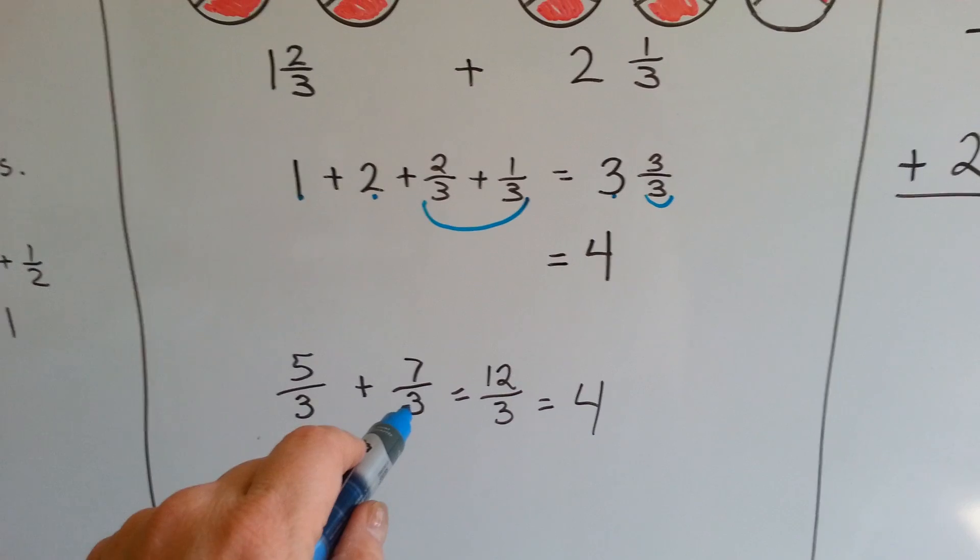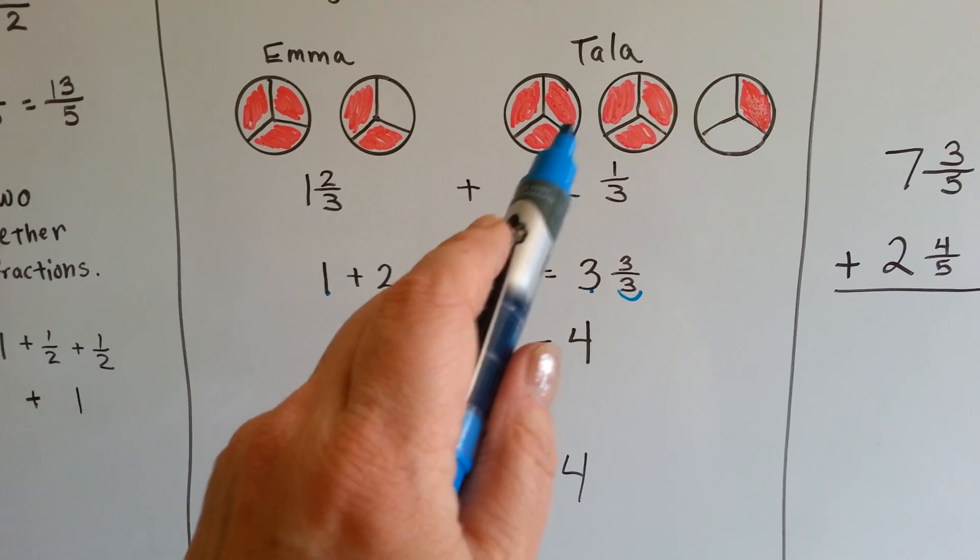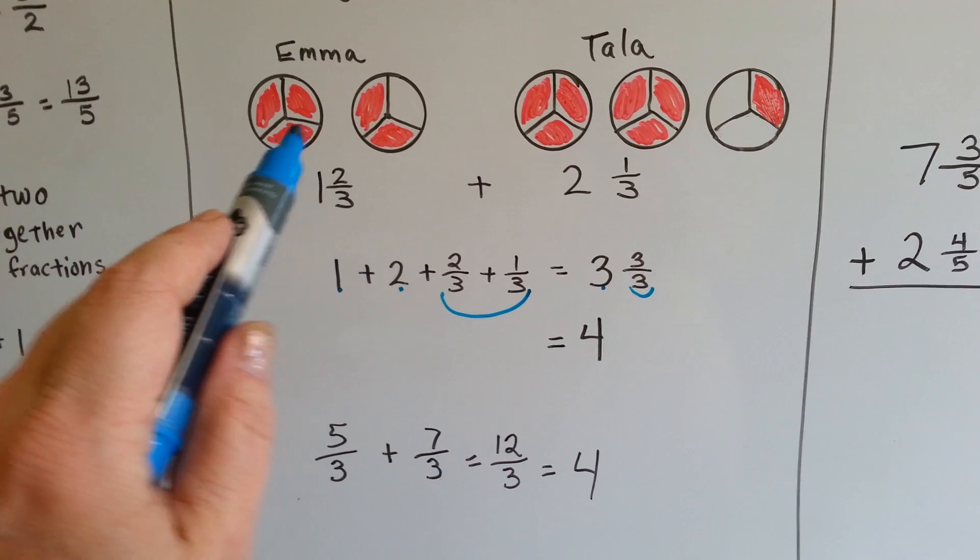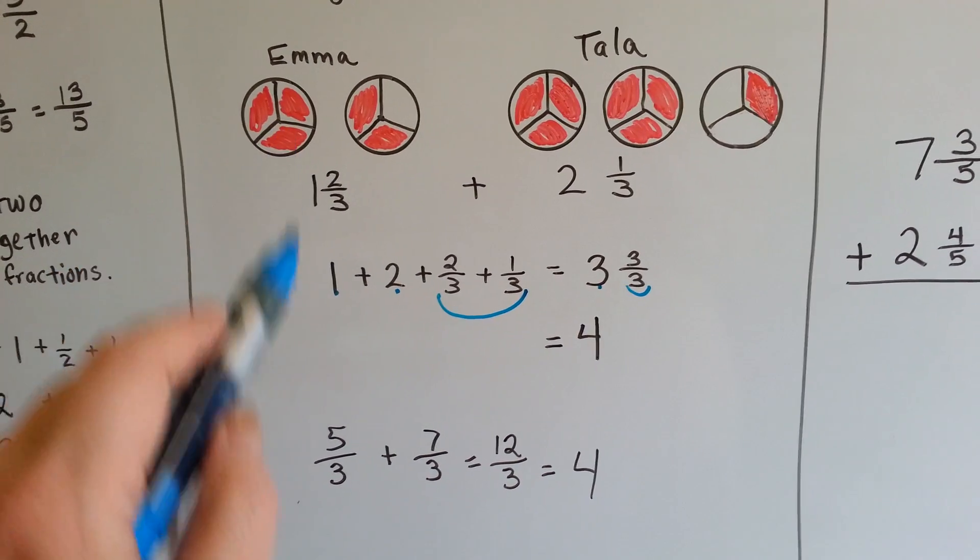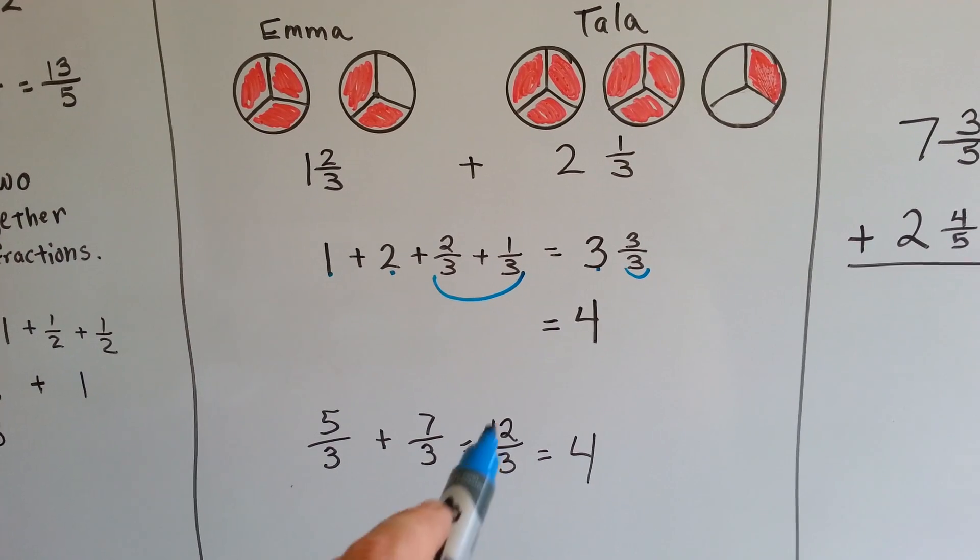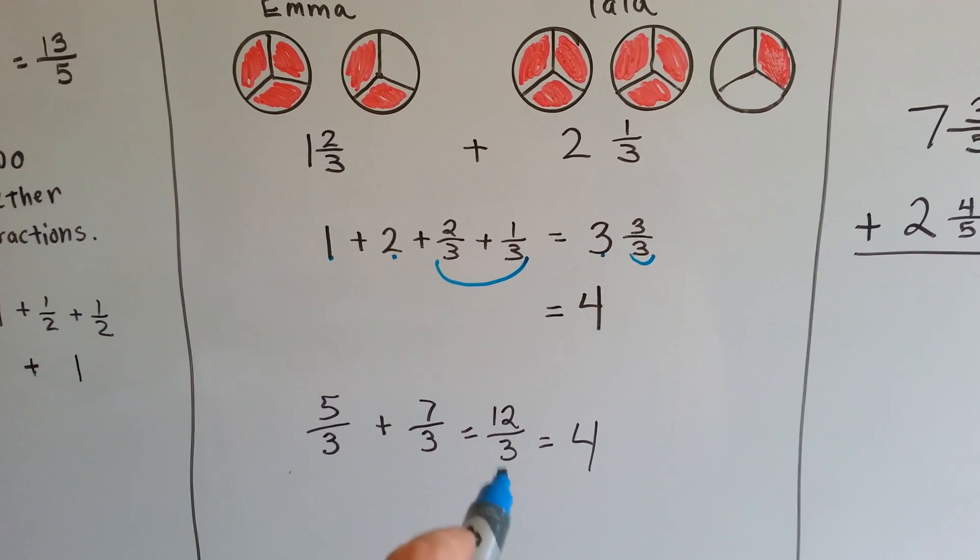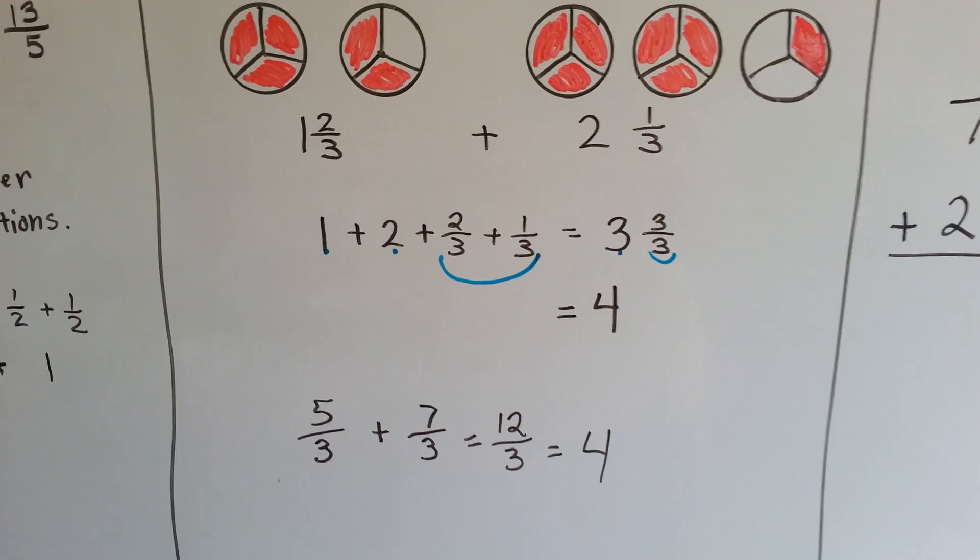She has seven red pieces and she has five red pieces. When you add the 5 and the 7 together, you get 12. Three goes into 12 four times. So, this improper fraction becomes four whole.